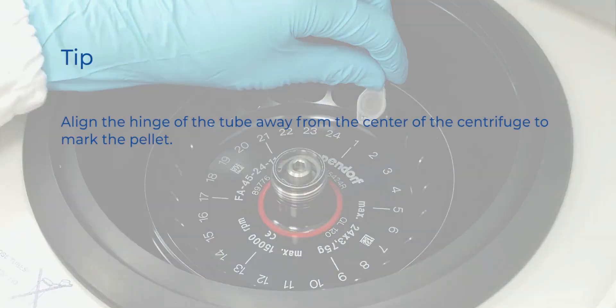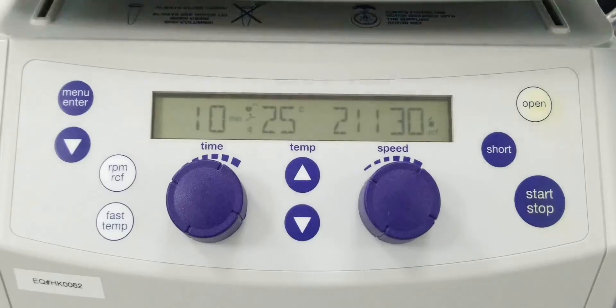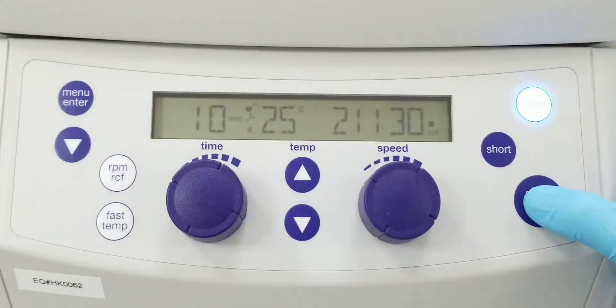Remember to align the hinge of the tube away from the center of the rotor to help locate the pellet after centrifugation. Max speed should be no lower than 4300 RCF.